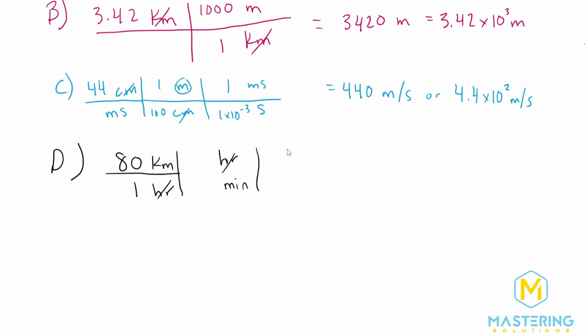But we need seconds, not minutes. So we know in one minute, there is, of course, 60 seconds. So now minutes will cancel. Now we're in kilometers per second. So now let's convert the kilometers to meters. And we know in one kilometer, there are 1000 or 10 to the three meters.